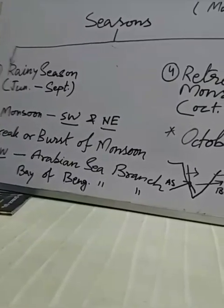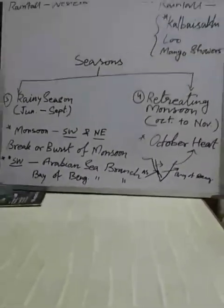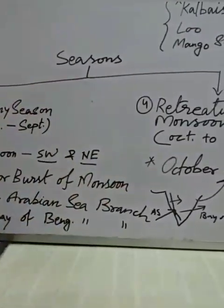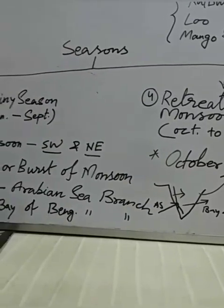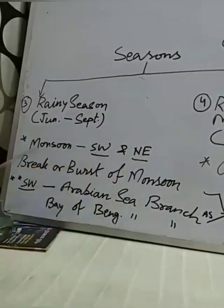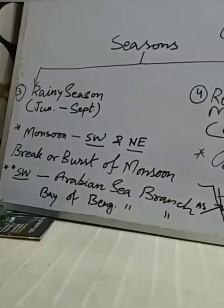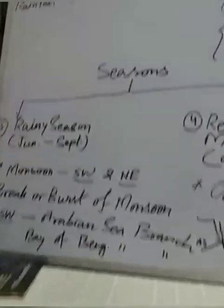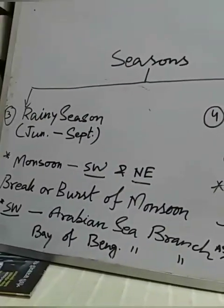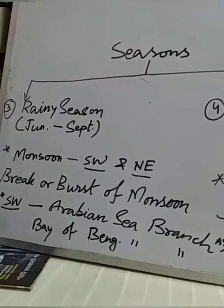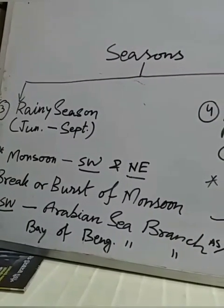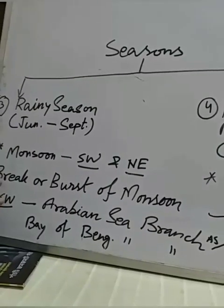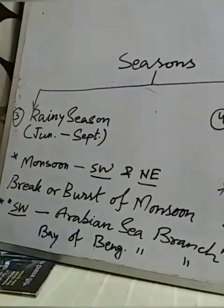Temperature is very moderate during this time, especially in the parts which receive rain. During this period, we can also see a situation called the break or burst of monsoon. It means the sudden approach of monsoon — the wind comes with full speed and there is thunder and lightning, which also brings rain. That situation is called the break or burst of monsoon.